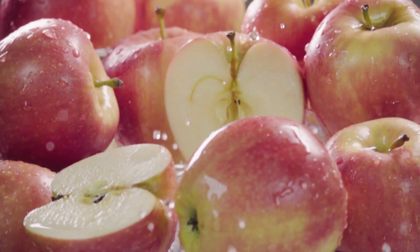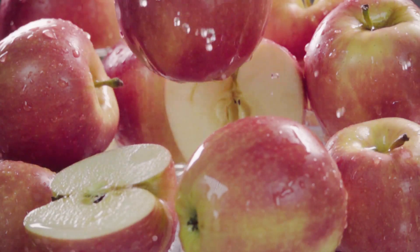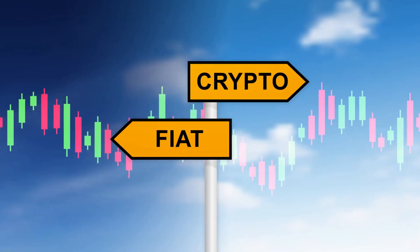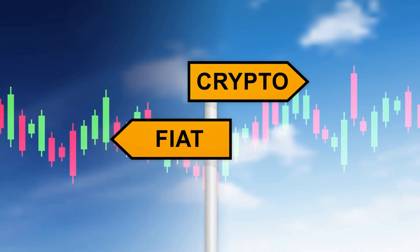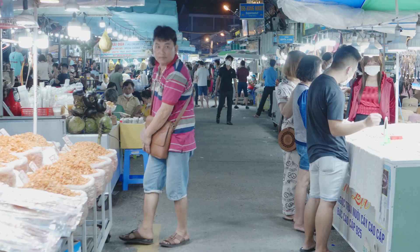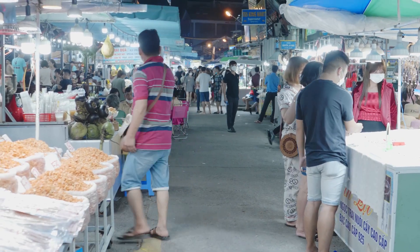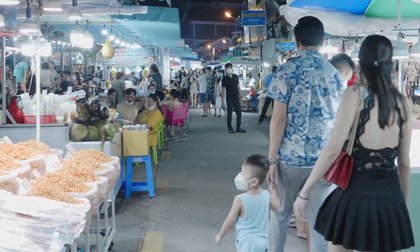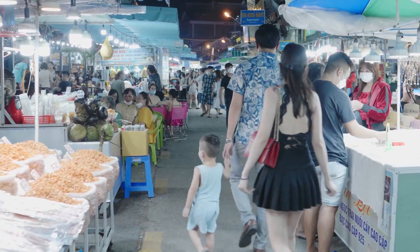Imagine you want to buy an apple, a crisp and delicious one. You have two distinct choices available to you. You can visit a lively farmer's market, a vibrant hub where prices change with the wind, and you haggle directly with the sellers to strike a deal. This dynamic environment with its constant negotiation is the world of the order book.